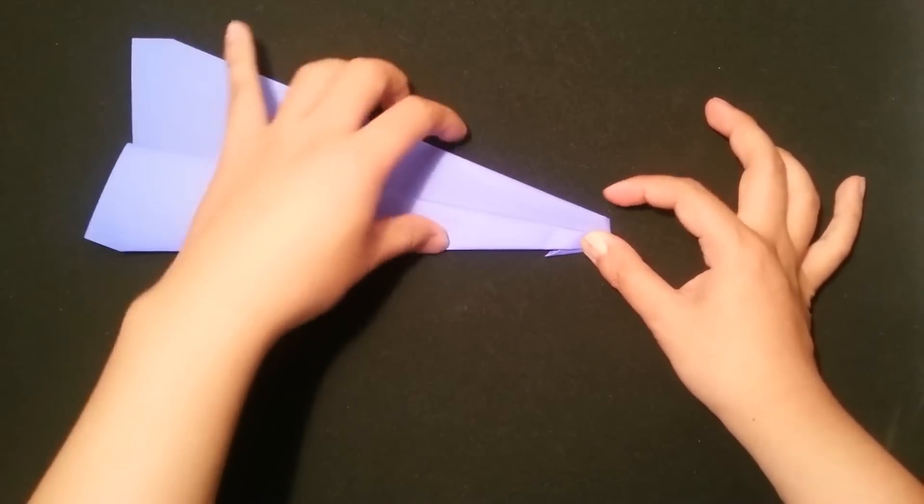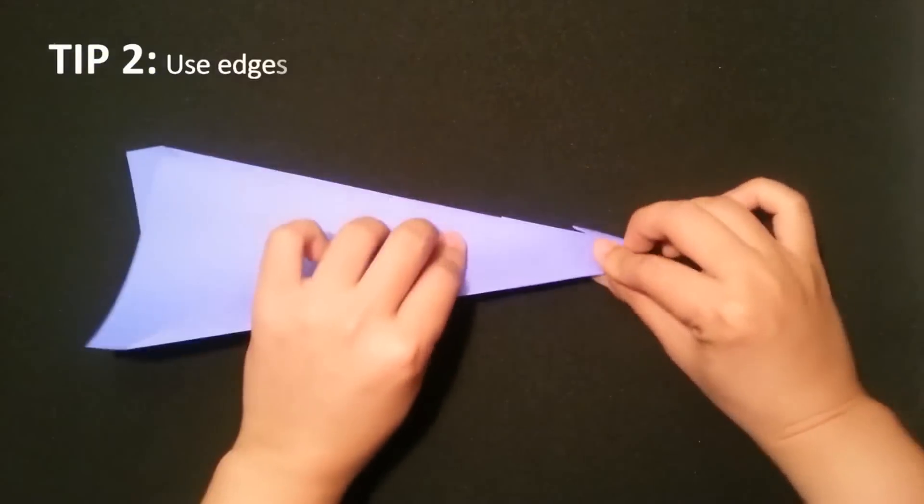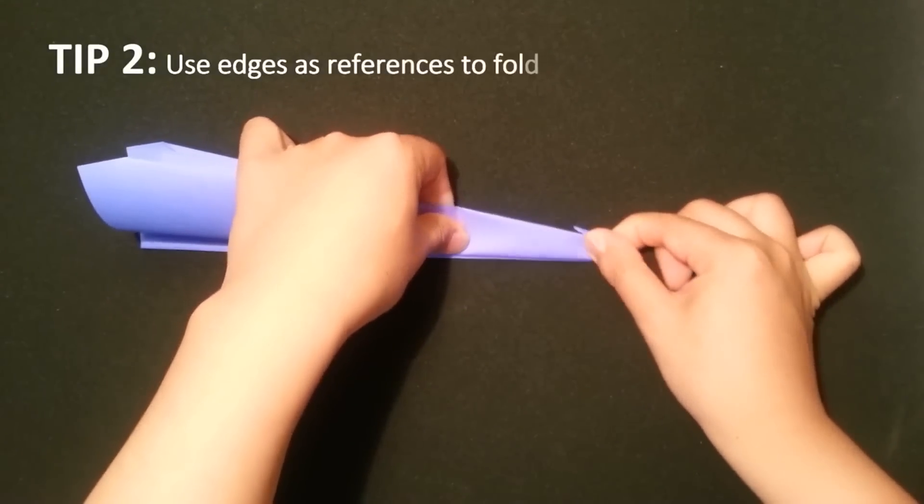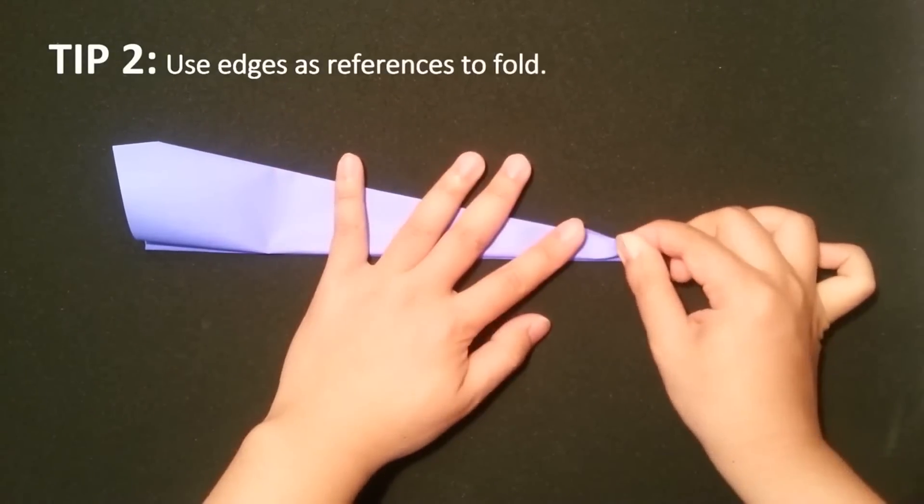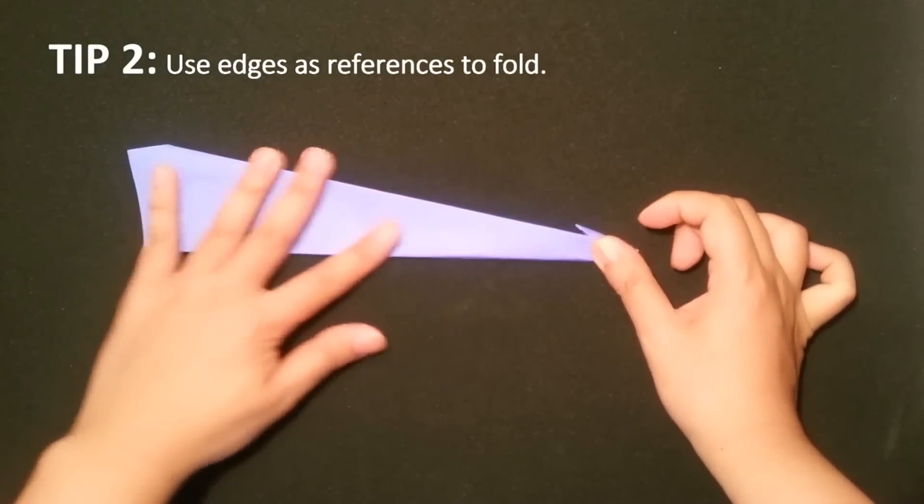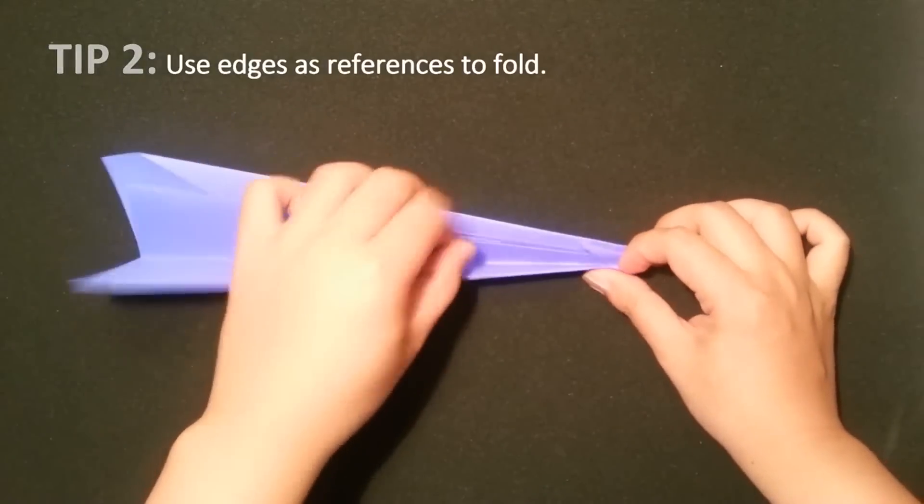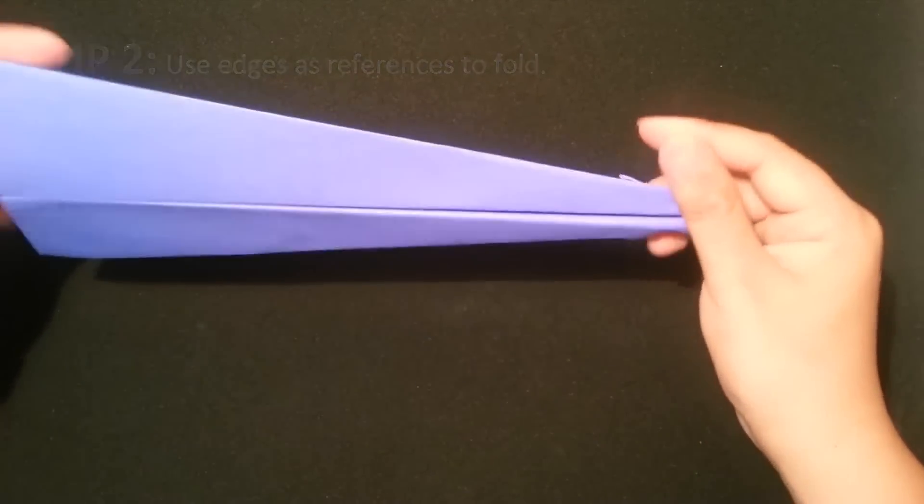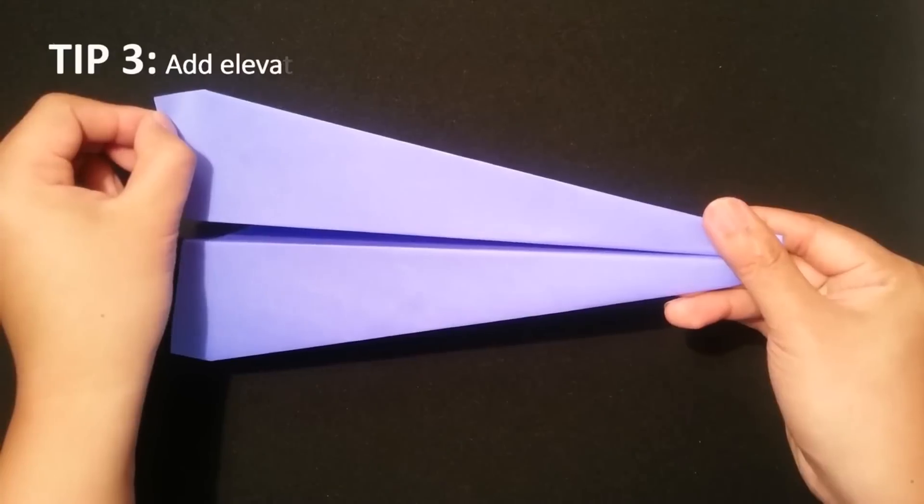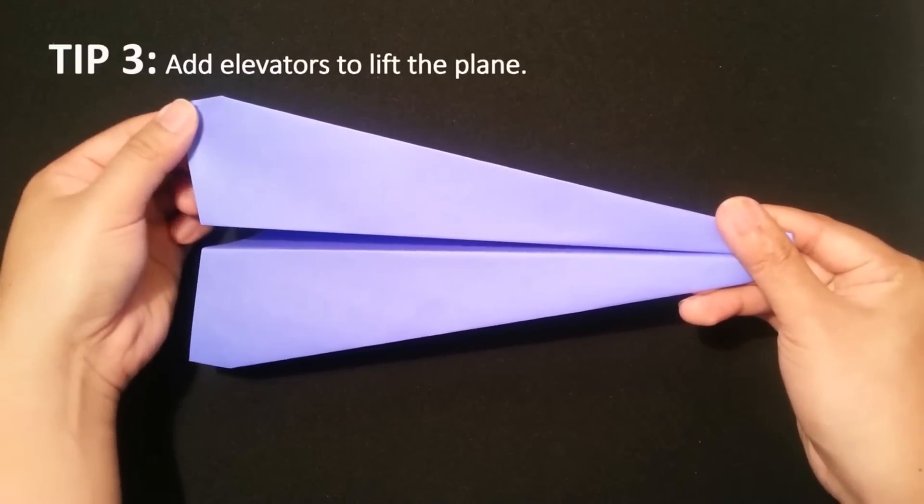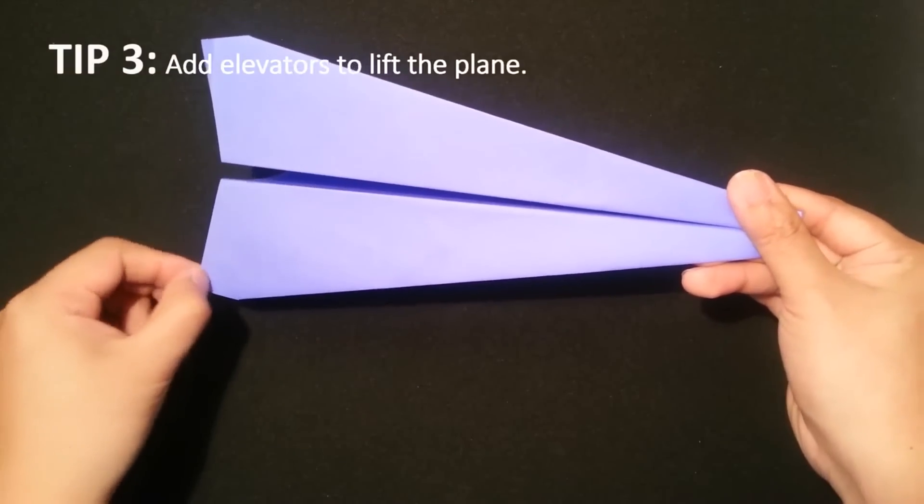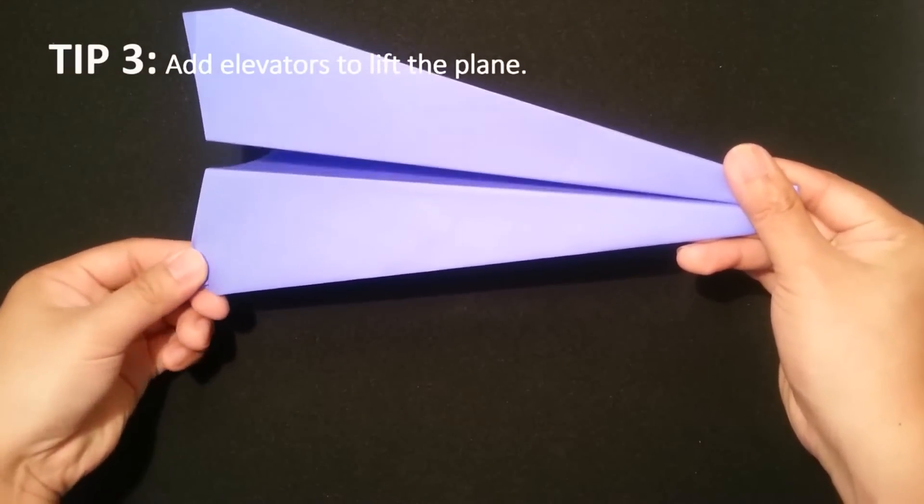Then repeat the same step for the other side. Here we go. Open the paper. Make sure that you create an elevator on the bottom as well, fold it like this. And repeat the same step for this side.